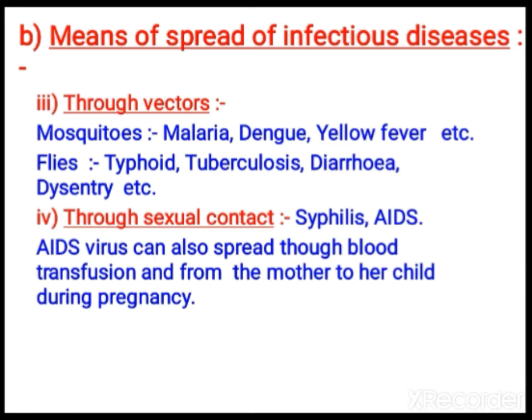Through sexual contact, syphilis and AIDS are spread. AIDS, apart from sexual contact, also spreads through blood transfusion and from mother to child during pregnancy.